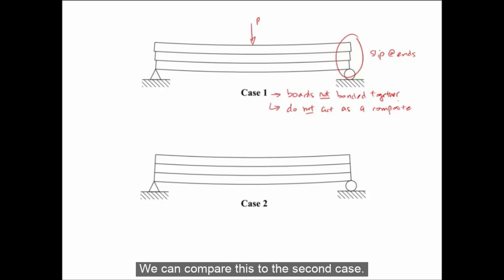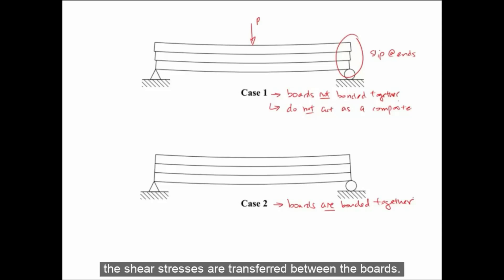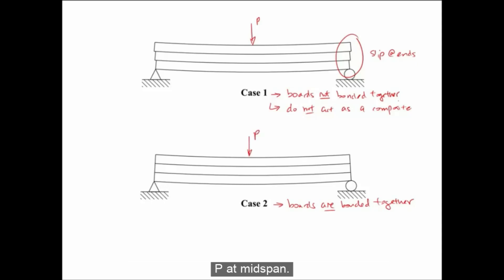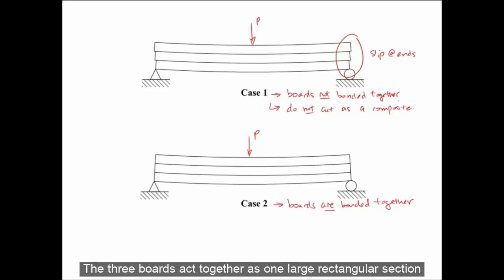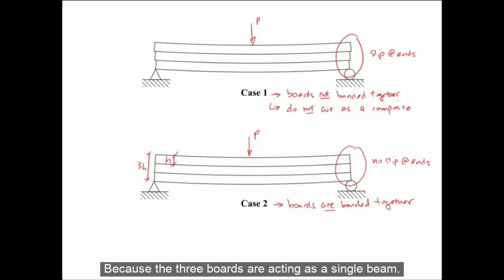We can compare this to the second case. Here, the boards are bonded together, so the shear stresses are transferred between the boards. When this beam is loaded with the same point load P at mid-span, the three boards act together as one large rectangular section with a total height of 3H, where H is the height of one board. And we can notice that there is no slip at the ends, because the three boards are acting as a single beam.